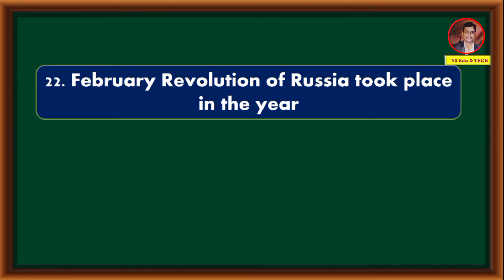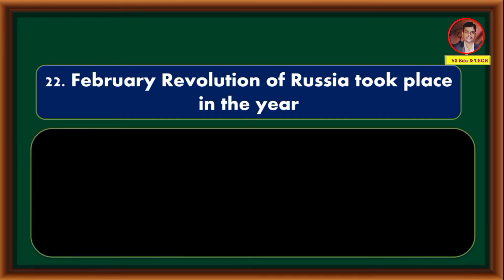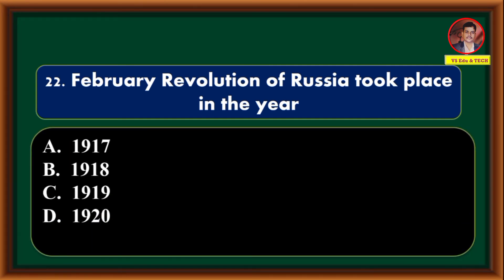The February Revolution of Russia took place in the year — 1917, 1918, 1919, 1920. Correct answer is option A: 1917.